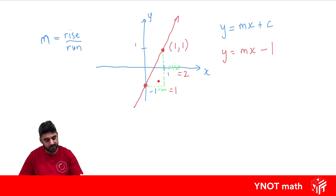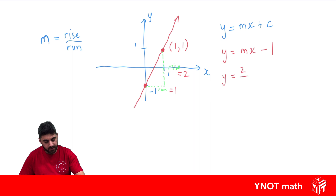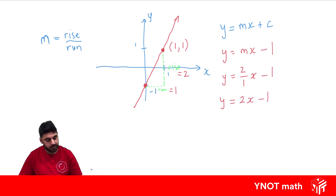If it's sloping the other way, we know the gradient should be negative. Now we can write our full equation, where the gradient is the rise divided by the run — the rise is 2 and the run is 1 — and that's our gradient. We can tidy that up because 2 divided by 1 is 2. That becomes our equation of the line, using the fact that we know this has to be the gradient and this has to be the y-intercept.